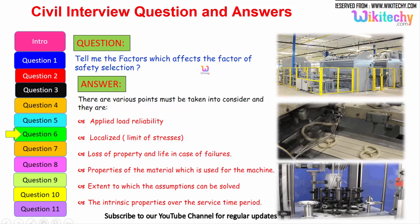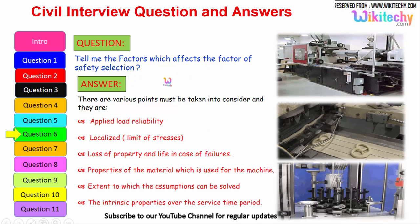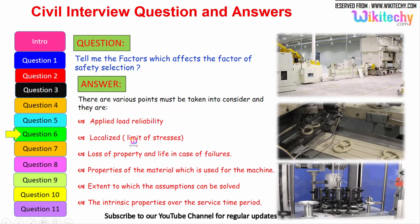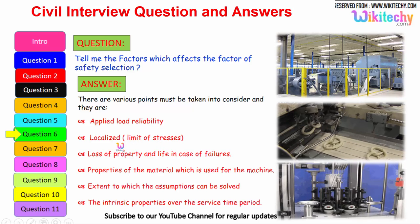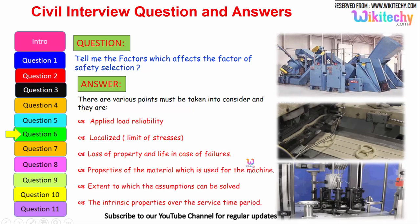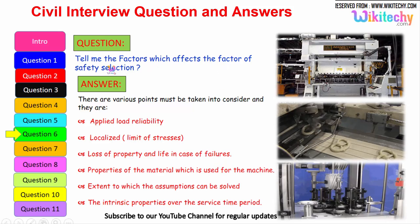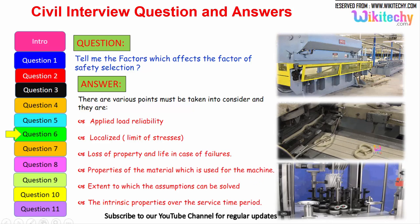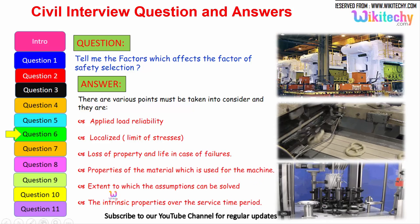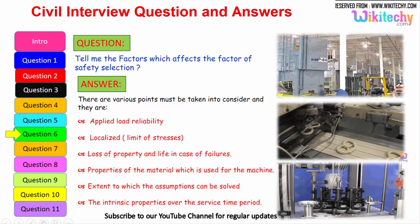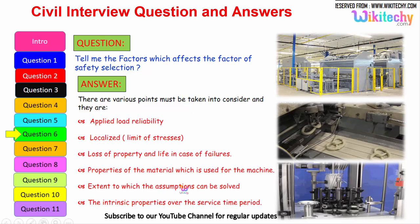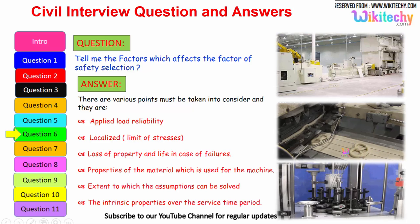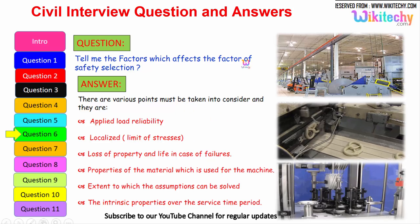Now let us see the factors which affect the factor of safety selection. Here are some of the factors: Applied load reliability. Limit of stress as thus localized. Loss of property and life in case of failures. This is a very important factor you should understand on safety selection. So properties of the material which is used for the machine. What kind of material you are using. The extent to which the assumptions can be solved. How much it will extend, compress or something like that. Everything to be solved. The intrinsic property over the service time period. How it will sustain, everything we need to manipulate for the factor of safety selection.